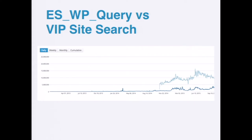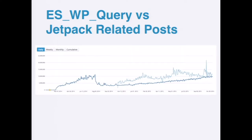It's also a very popular query type. The top line is ESWP queries and the bottom line is VIP site search. Even from the initial launch of ESWP query, it's been 5x more popular than actually doing site search. It's actually even more common than Jetpack related posts. So this is a common use case where we can use Elasticsearch to solve real everyday problems and scale websites better.